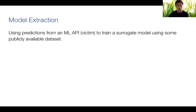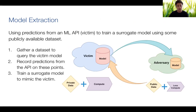One popular kind of model stealing attack is model extraction, which is applicable when the machine learning model is available on the web through an API. The principle is based on knowledge distillation: the victim model is queried on multiple data points from a publicly available dataset, and the predictions are leveraged to train an alternate machine learning model.